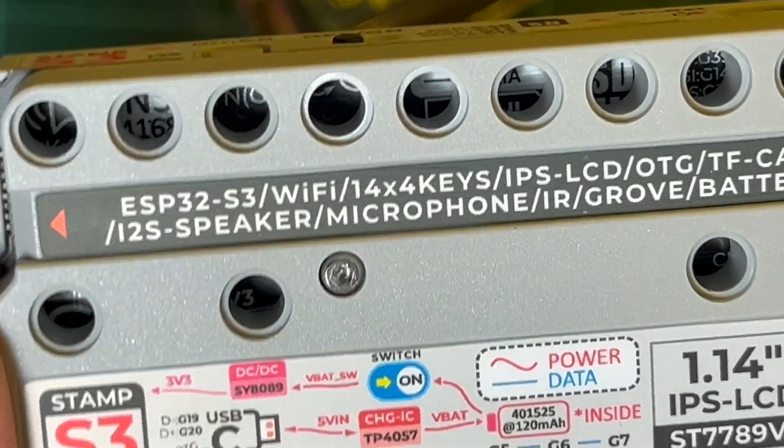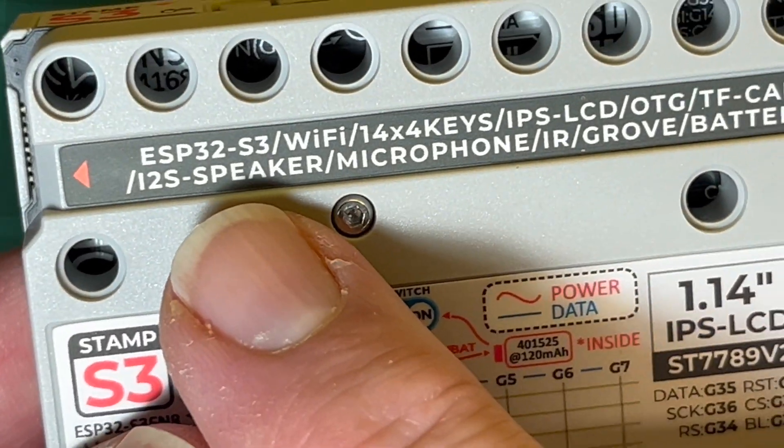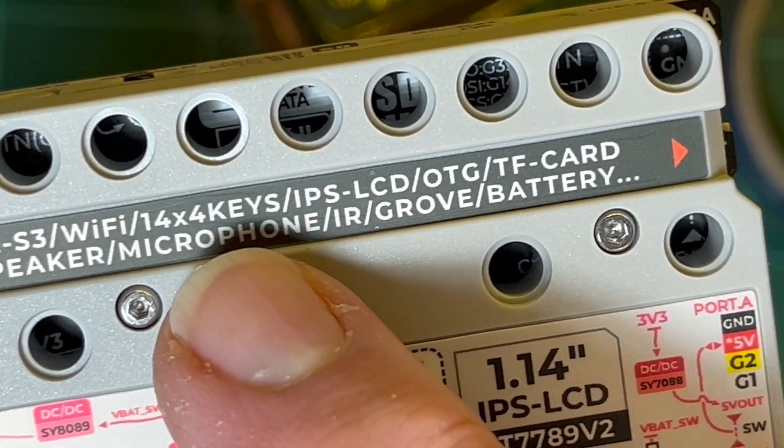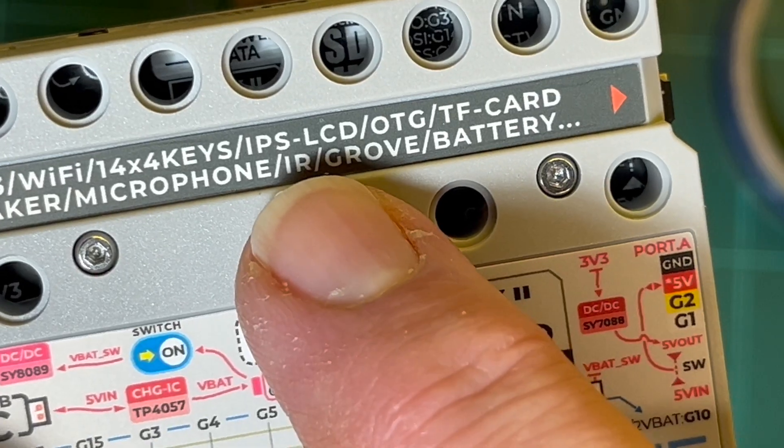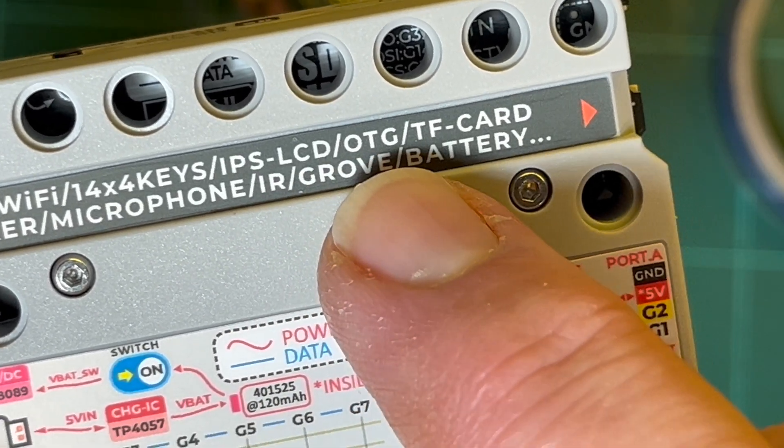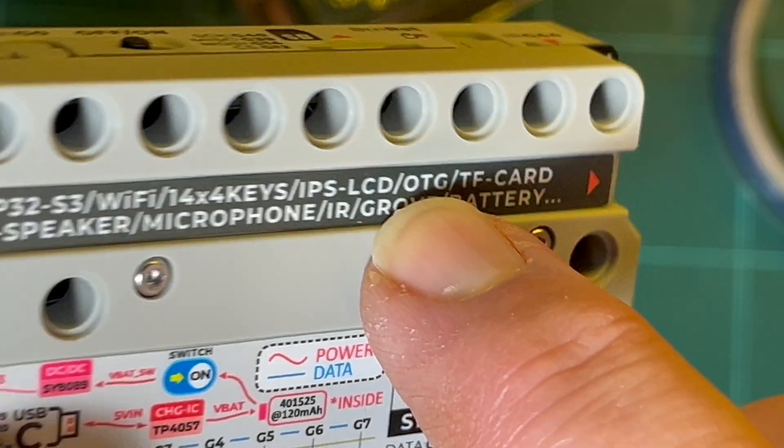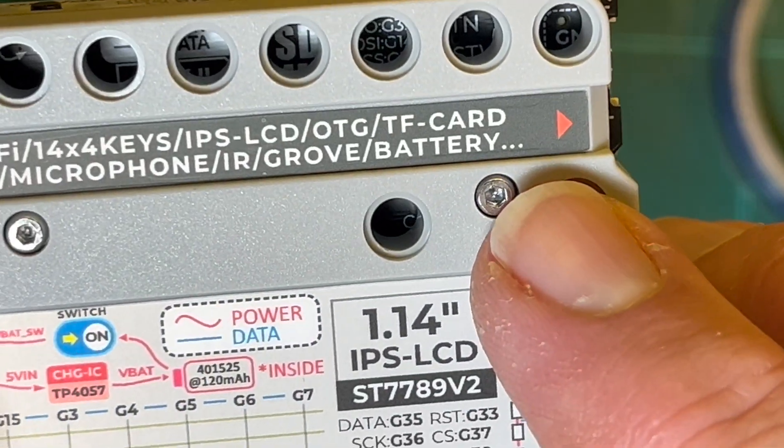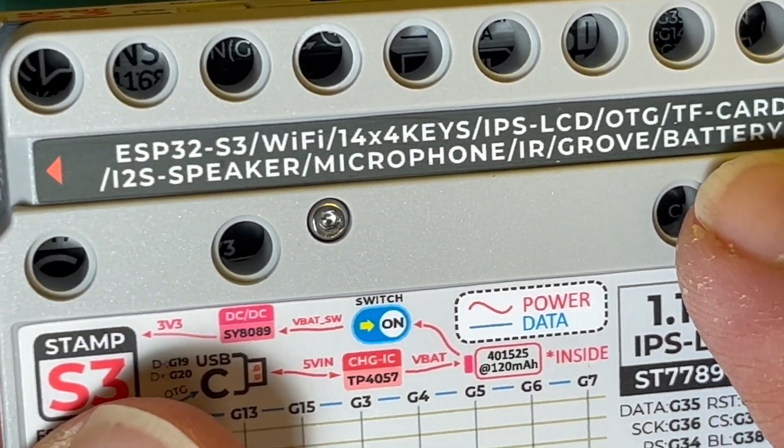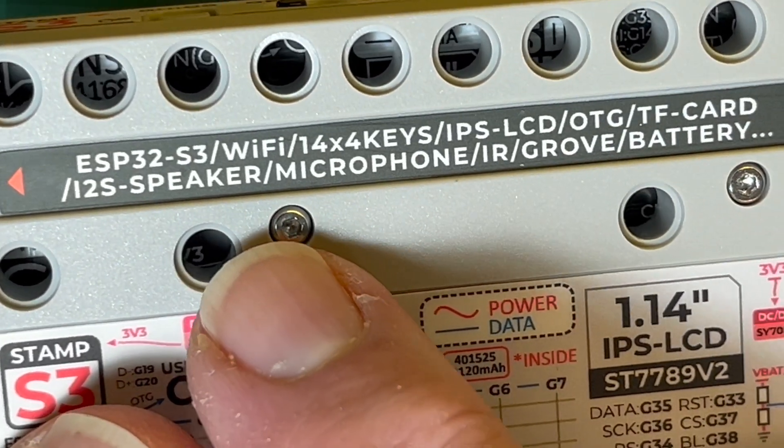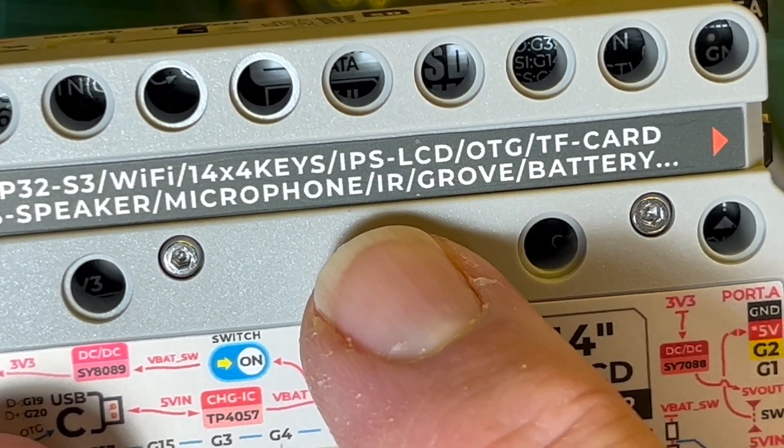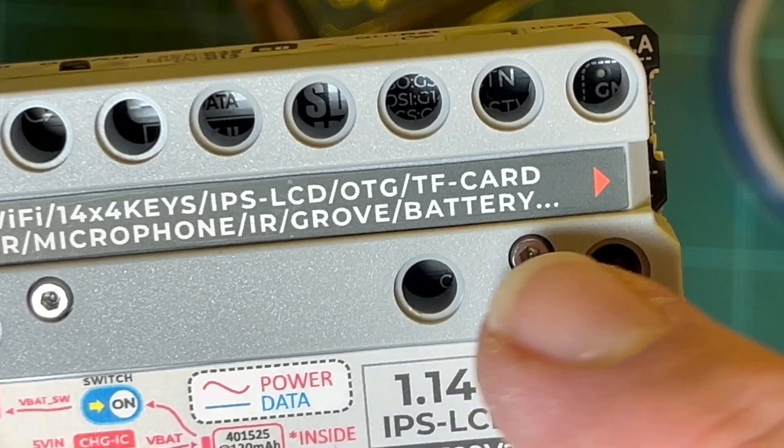Made it pretty. Button, okay. Reset button, okay. Oh IR G44, so infrared as well. Oh here we go, this is everything that's in it apparently. IPS LCD, okay it's not OLED. OTG, so that's on-the-go for the USB I guess. Micro SD card, I2S speaker, microphone, infrared, Grove, battery, and it continues.